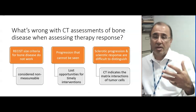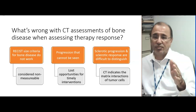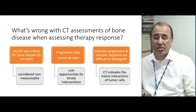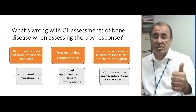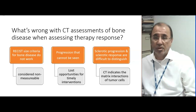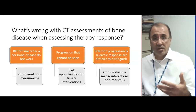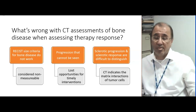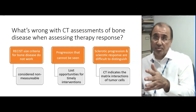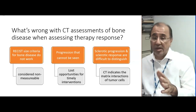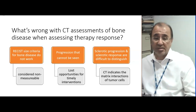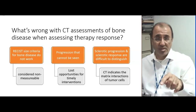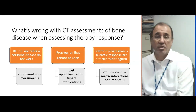There are three major problems with using CT scans for assessing bone disease response. One, RECIST criteria don't work — bone disease is considered non-measurable. Number two, progression occurs and you don't even see it, meaning there are lost opportunities for timely interventions. Number three, sclerotic progression and sclerotic response are really difficult to distinguish on CT, because the CT scan indicates the matrix response to the presence of tumor cells, not the tumor cells themselves.